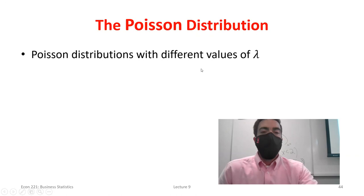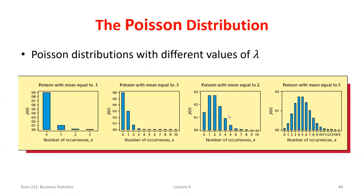As we move to Poisson distributions with higher and higher lambdas or average rates, we can see the distribution is always right-skewed — it makes sense because we can never see anything below zero, so it's always censored on the left. As lambda gets higher, the distribution starts to shift and looks closer to something approximately normal, but it will still have a longer right tail than left tail.